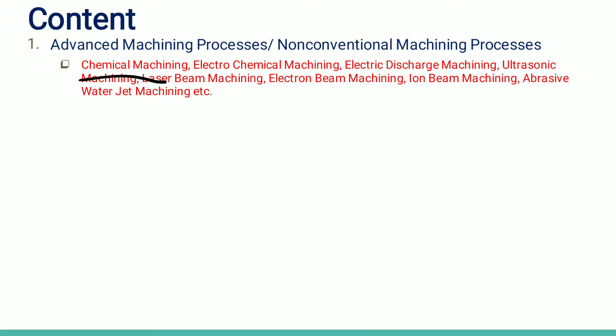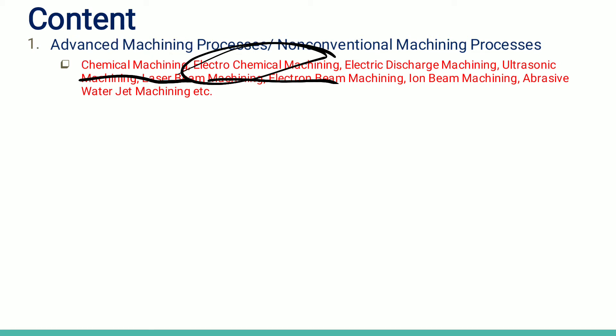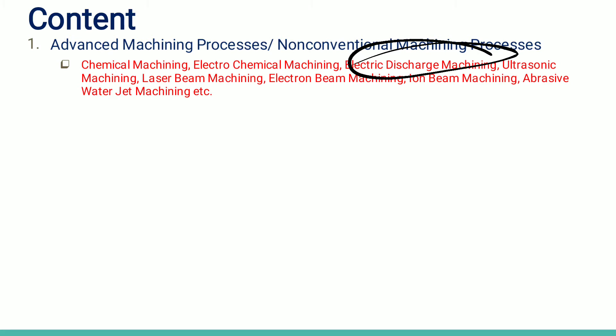In chemical machining, material is removed using a chemical reaction between the chemical and the work piece. In electrochemical machining, electricity is used along with chemistry to remove material. In electrical discharge machining, an abrasive slurry is used along with electricity to generate a spark — this is called EDM. In ultrasonic machining, vibrations are used for material removal.